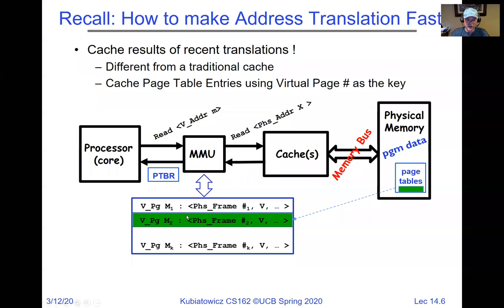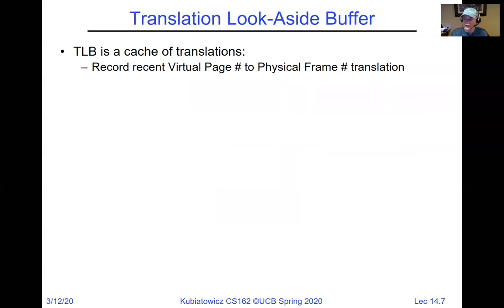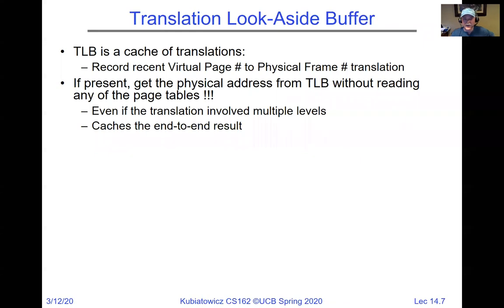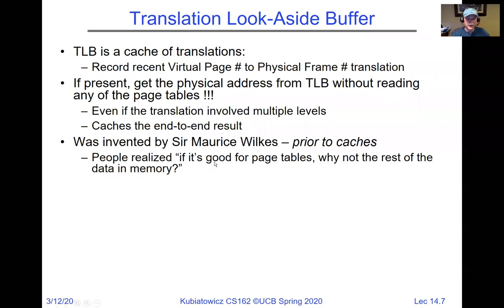We're going to talk about how caches could be structured, and figure out how to structure the TLB — the translation lookaside buffer. The TLB itself is a cache of translations. If a translation is already present in the TLB, you grab the physical address without ever touching the page table, avoiding a trip all the way down to DRAM. Interestingly, the TLB was actually invented by Maurice Wilkes prior to caches — and people decided if it's good for page tables, why not for the rest of memory? And so, a cache was born.